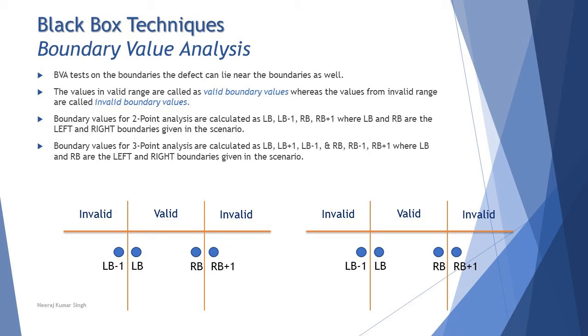When you go for deeper analysis on certain safety-critical systems or some complex scenarios or critical scenarios, or probably where the risk is more involved, you prefer to take more than two values. Three-point analysis allows you to take three values on each boundary where one will be outside the boundary and two will be inside the boundary.